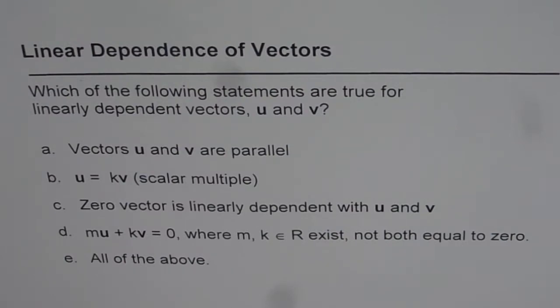C is zero vector is linearly dependent with u and v. D is mu plus kv equals to zero, where m, k belongs to real numbers, they exist, not both equal to zero. One of them can be zero. All of the above.